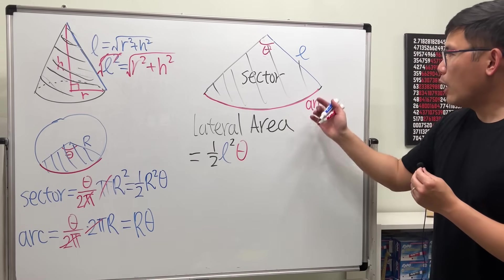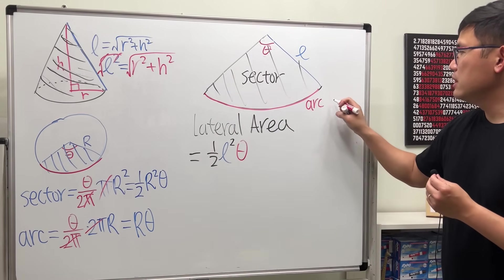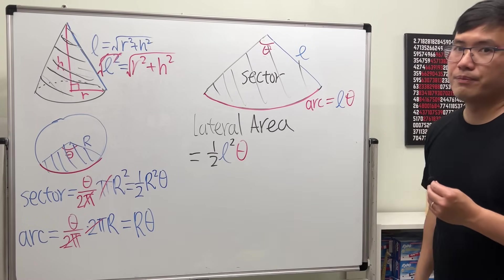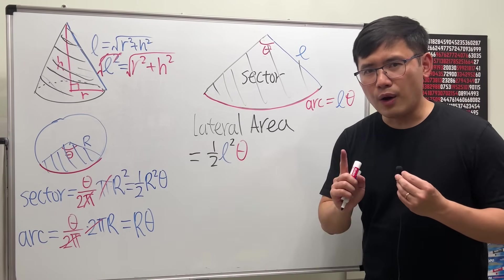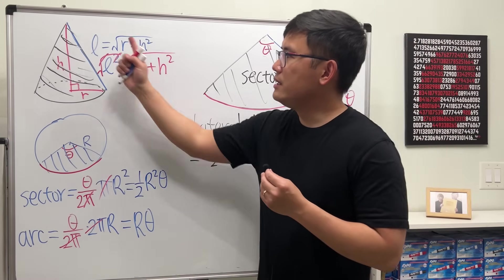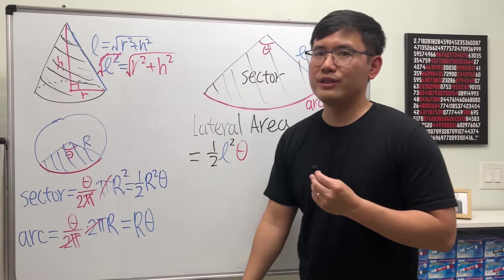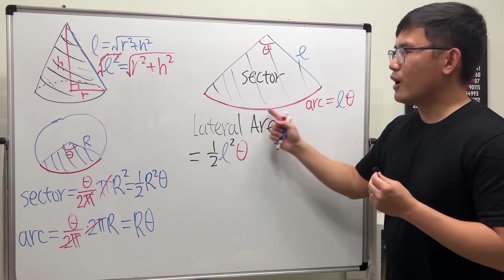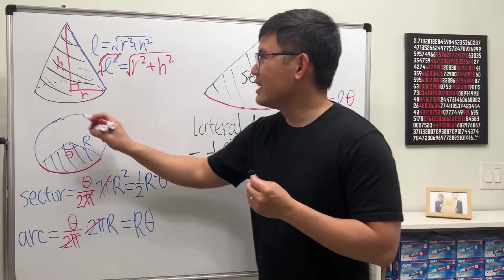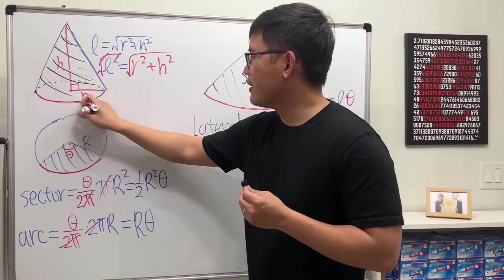So in our case, this arc is just this times that. We have L times theta. Pretty good. Now, we have to make the connection between this arc with the picture that we have originally. Where did we get this arc from the picture? The answer is, it's the base circle right here.